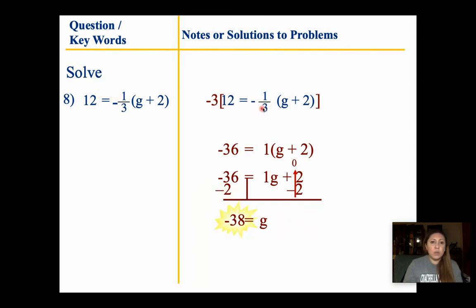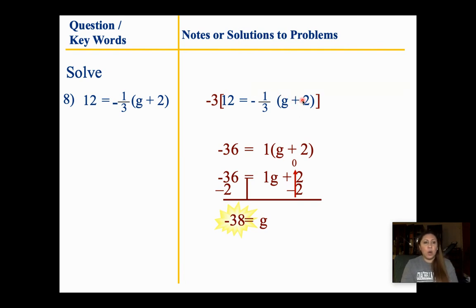Whatever number you have on the bottom of your fraction, multiply everything by that. If you have a negative, make that go away too. Negative 3 times 12 gives negative 36. Negative 3 times negative 1/3 — the 3 and the negative go away, and you're left with whatever is on top. Since it's being multiplied to it, that goes along with it — it's just as if it was all on the top, and we don't touch the top. From here, do a basic distribution, simplify, and then we're done.